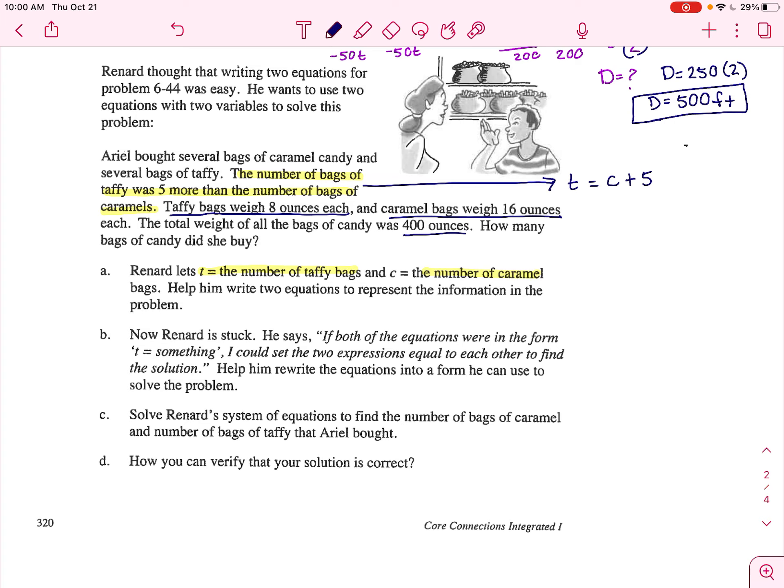So taffy is eight ounces. So I'm going to do 8T plus the caramel bags weigh 16 ounces. So 16C and together those equal 400. So T represents how many taffy bags you are going to buy. C represents how many caramel bags you're going to buy.